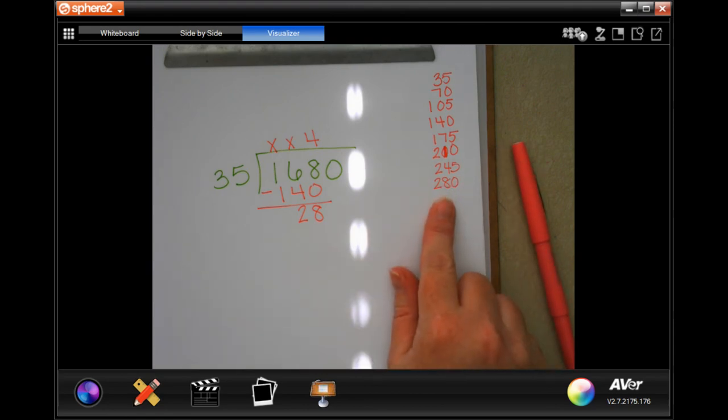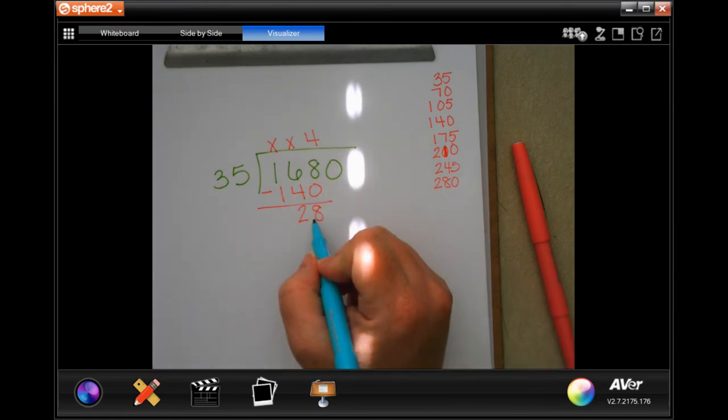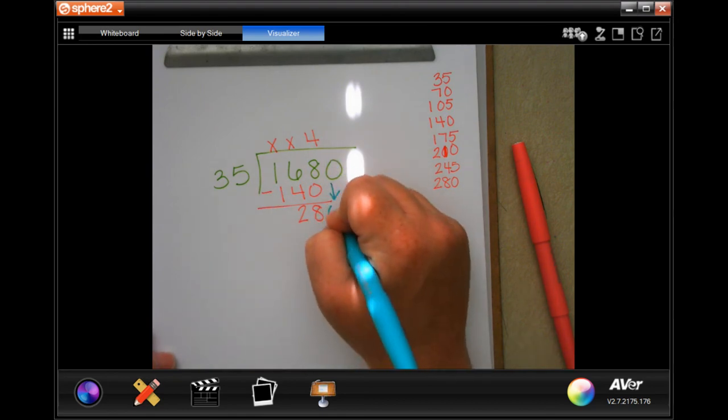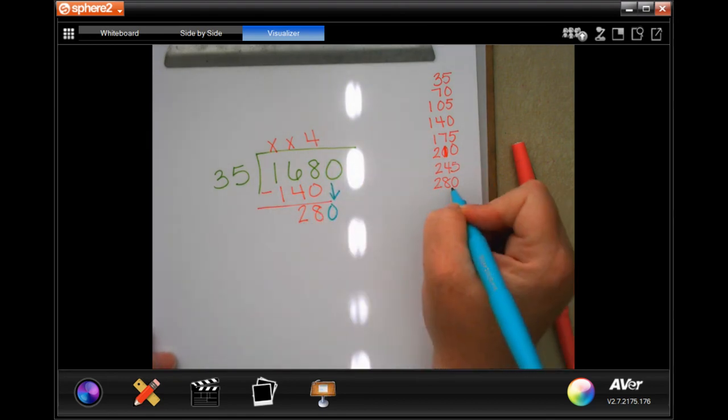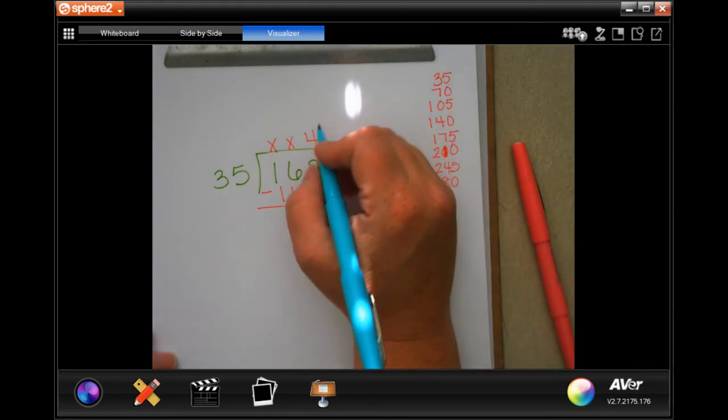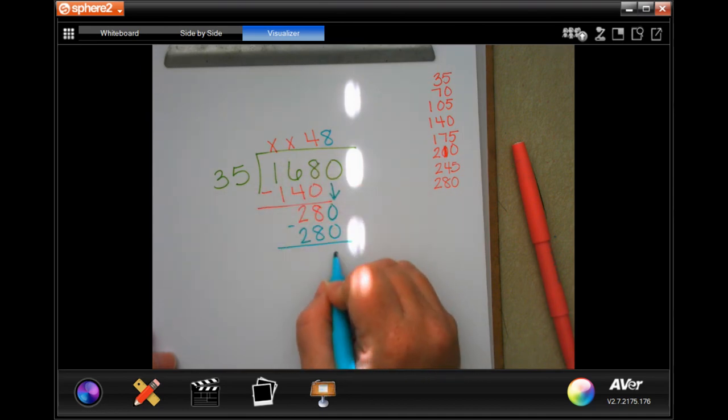So you can use your calculator to find out your multiples. You cannot use it for this because you have to be able to show your work. So now I subtracted. I got 28. 28 is smaller than 35. So I can bring down my 0. Well, 280. 280 is right there. So 1, 2, 3, 4, 5, 6, 7, 8 times. 8 times 35 was 280. I subtract, I get 0. So 48 bulbs.